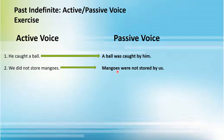'Mangoes' has been placed in the subject position at the start of the sentence. 'Mangoes' is a plural subject, that is why you add 'were' with it. 'Were not' — because it's a negative sentence. 'Stored' is the third form of the verb. Then 'by us'. So the full passive voice is: 'Mangoes were not stored by us.'